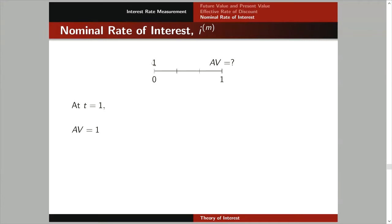Let's go one by one. Starting at time zero, we carry this amount to the first sub-period. What is the effective rate for this period? It's I upper 3 over 3. So to carry this one unit, you multiply 1 by (1 plus I upper 3 over 3). Now we need to carry it again to the next sub-period, multiplying by (1 plus I upper 3 over 3) again.